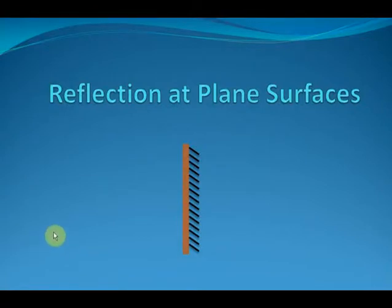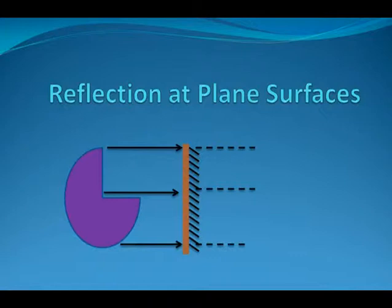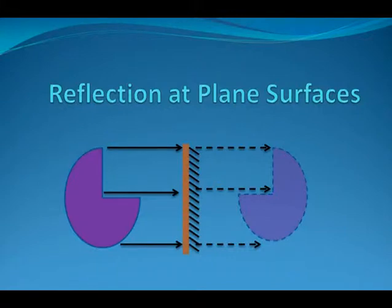How does this reflection take place? What will happen if you tilt the mirror you have in front of your eyes? What will happen if you have two mirrors in front of your eyes and you look at both of them at the same time? We are going to study a lot of interesting phenomena in this chapter — reflection at plane surfaces. So, let's begin.